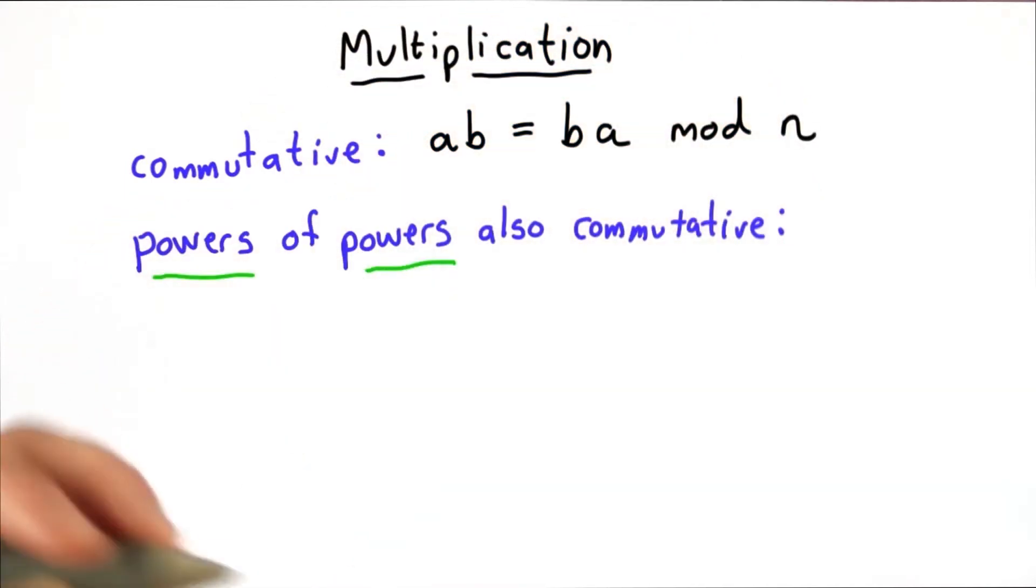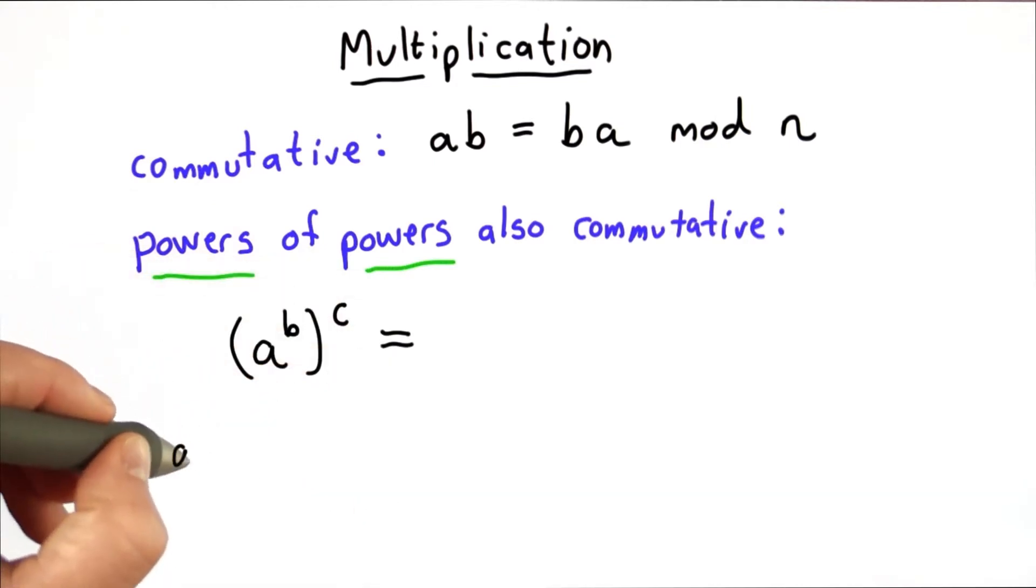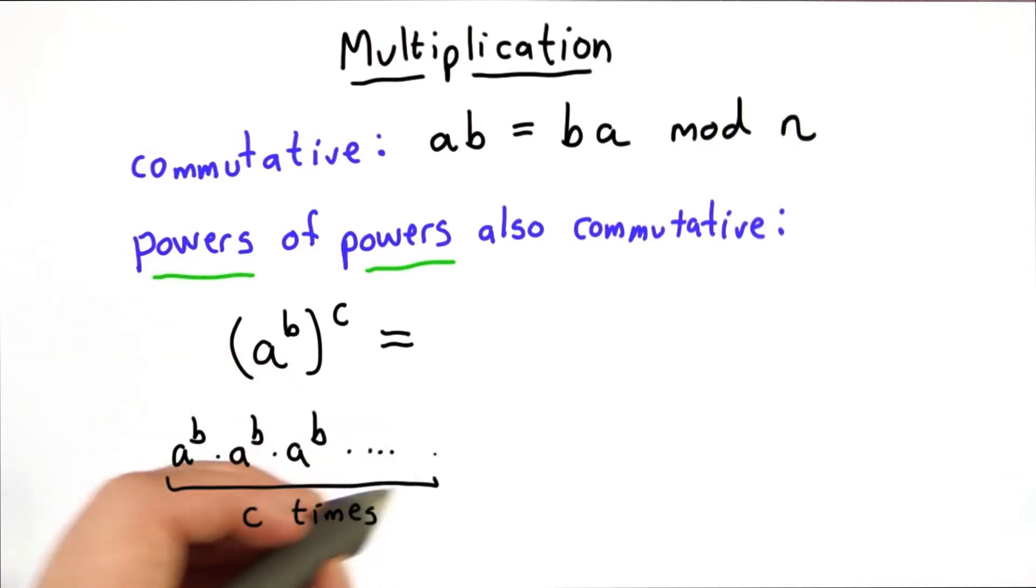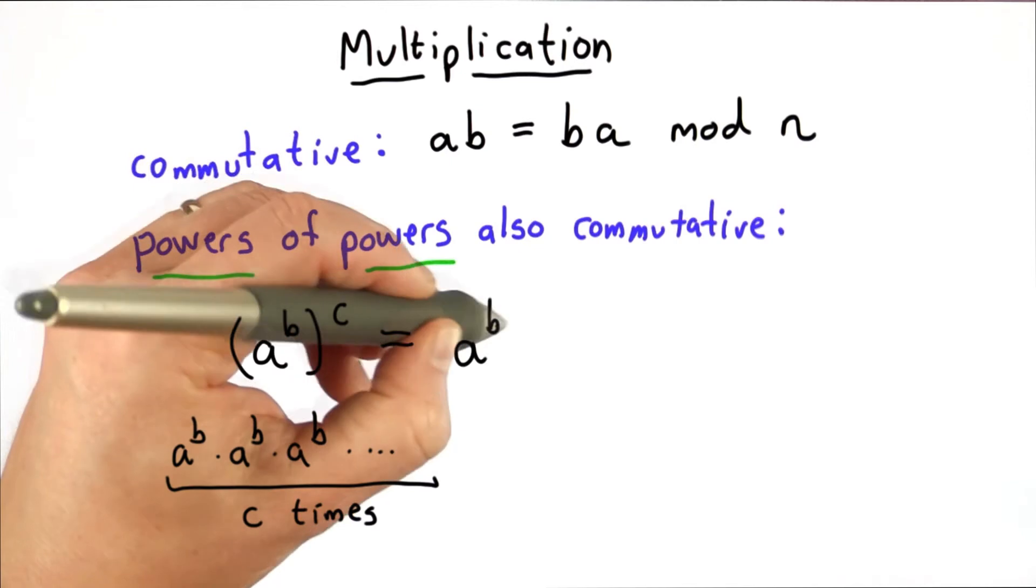This property also holds for powers of powers. That means for any integers, a to the b raised to the c power, that's equivalent to a to the b times a to the b times a to the b, c times, which is equivalent to a to the b times c.